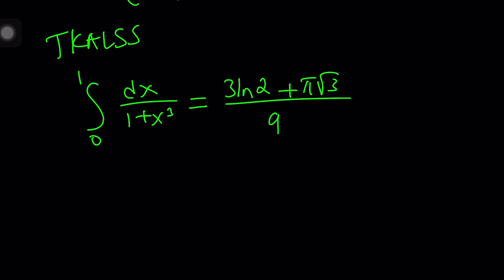Under those conditions, TKLSS, which stands for to keep a long story short, we have the following: from 0 to 1, dx over 1 plus x cubed is equal to 3 ln 2 plus pi root 3 divided by 9, which is very, very irrational. But don't worry, we're going to set this equal to something else. Now, again, the question comes up: what does this have to do with our series? You'll see in a little bit.